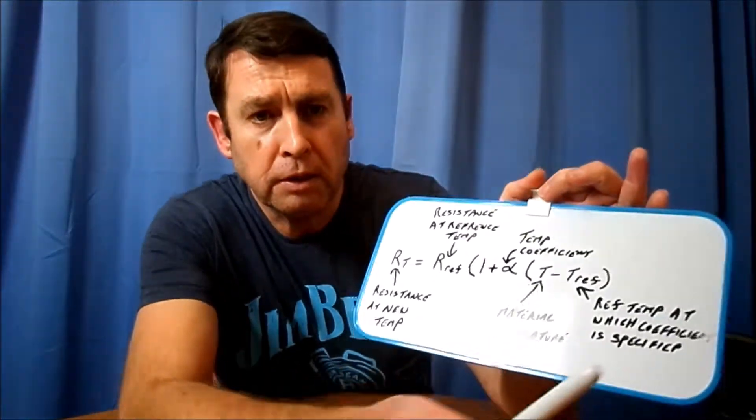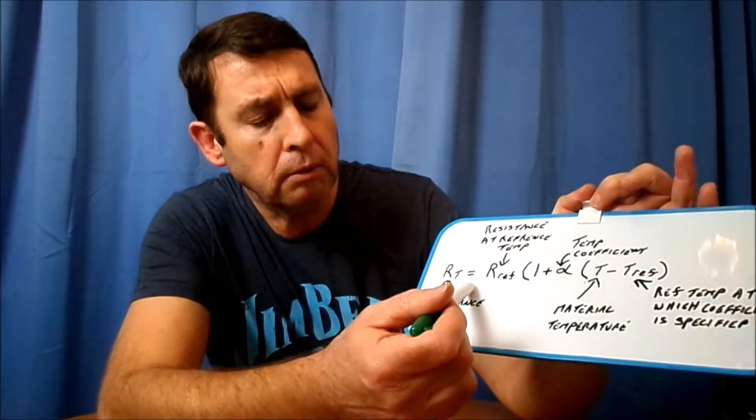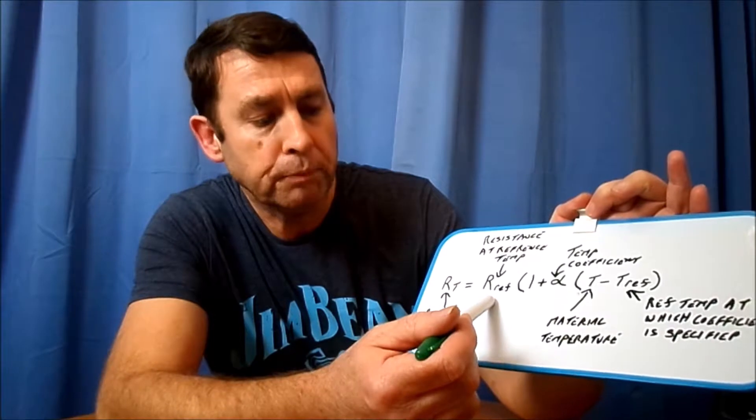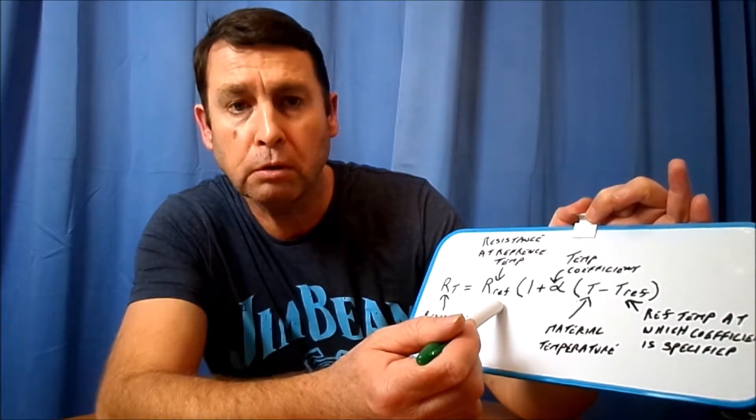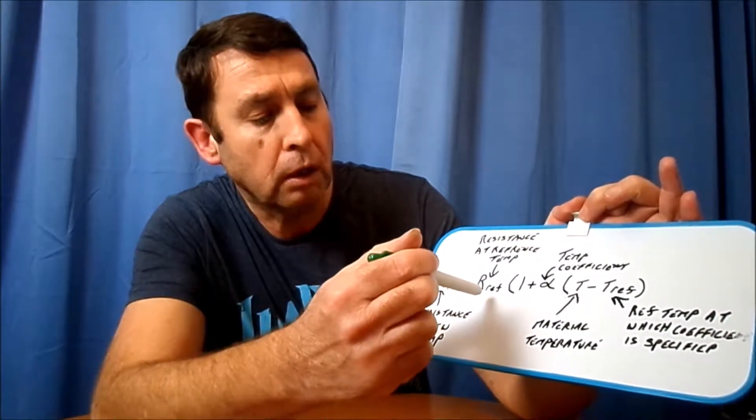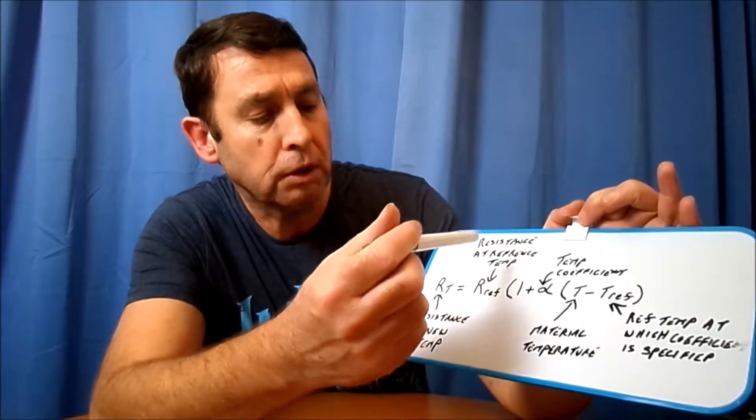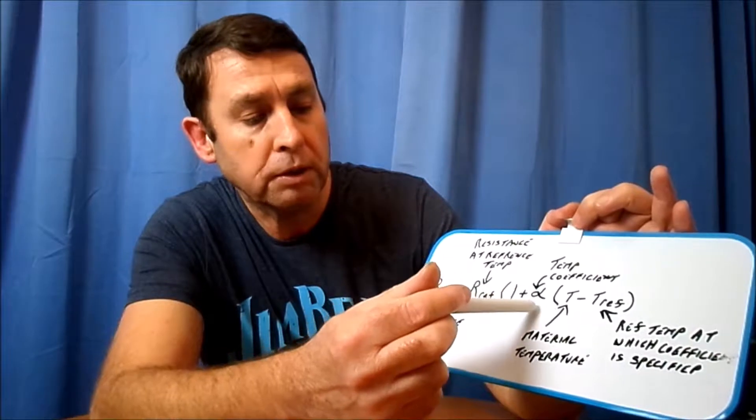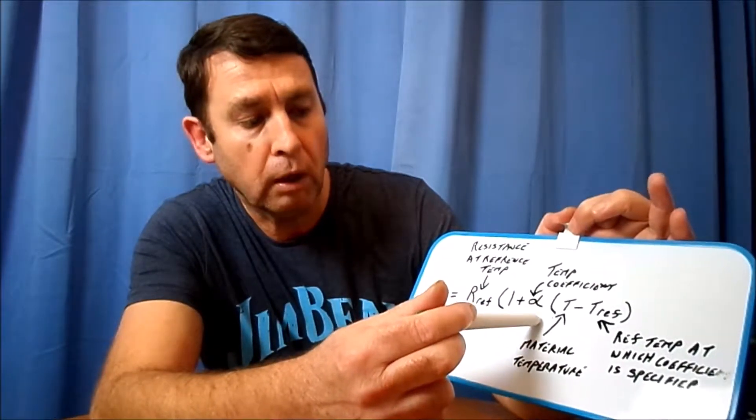Now, what you'll see with the temperature coefficient - the formula they tend to use is RT, which is the resistance at a new temperature, so it's a temperature that you want to work out, is equal to RF, which is a resistance at a reference temperature, times one plus the Greek letter alpha.